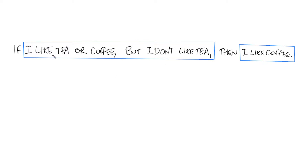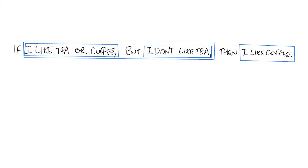Now the first part of this, which says 'I like tea or coffee, but I don't like tea,' I can break this down into smaller propositions. The first part says 'I like tea or coffee,' and the second part says 'I don't like tea.' Notice that when I'm breaking this sentence into smaller pieces, each of the pieces is still a proposition — each piece is still something that's either true or false. 'I like tea or coffee' is either true or false, 'I don't like tea' is also either true or false, and 'I like coffee' is also either true or false.